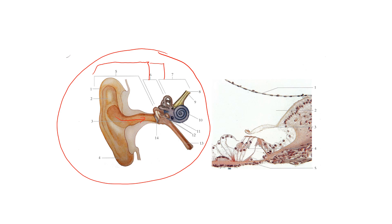The inner ear is this snail-shaped structure, which is number 10, called the cochlea. This houses the organs for hearing and the three semicircular canals, which are for balance.